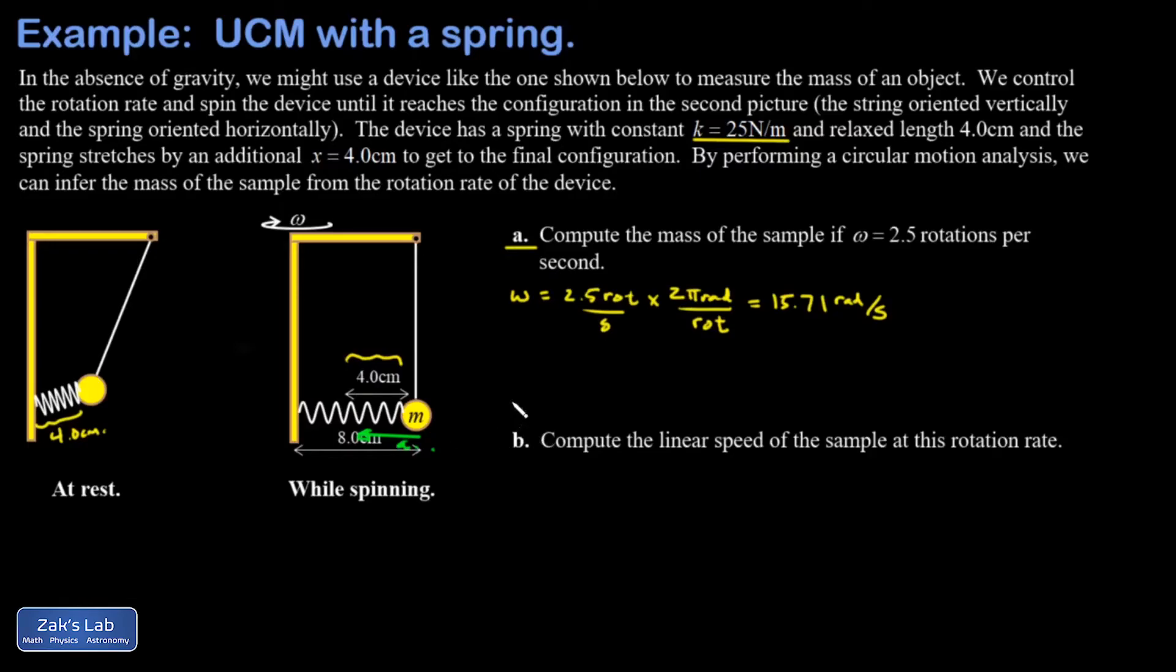So we write down Newton's second law. Either you can say gravity points straight down so it's not part of this horizontal analysis for the centripetal acceleration, or I can say I'm actually doing this in the absence of gravity - so you could measure masses on a spaceship if you wanted. Our mass is little m.